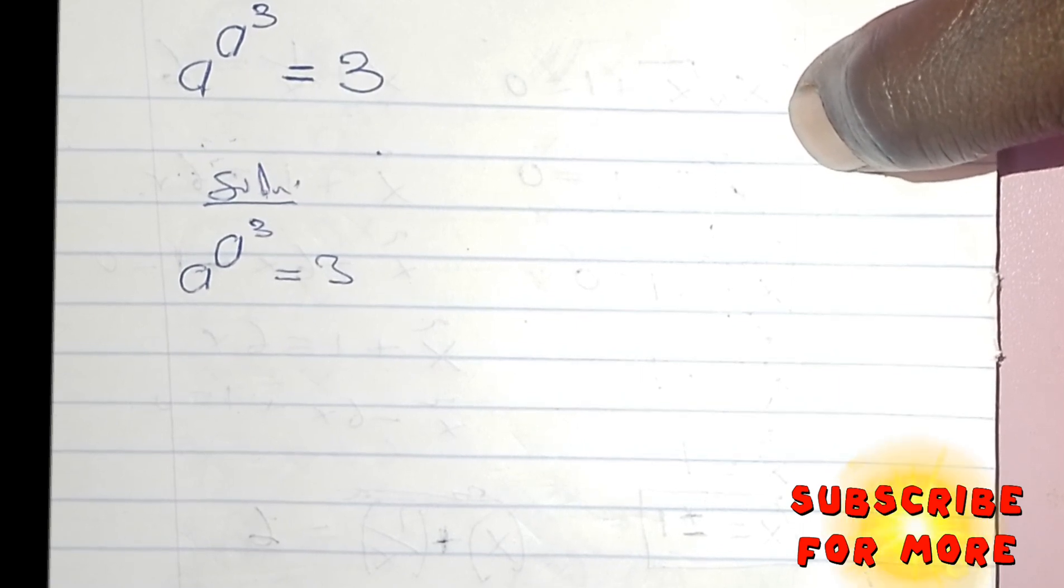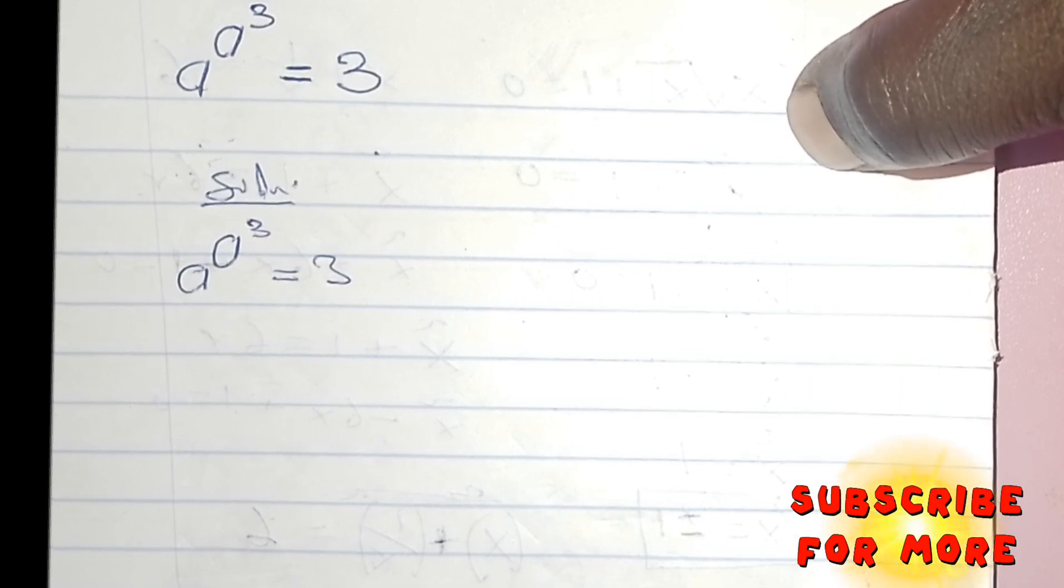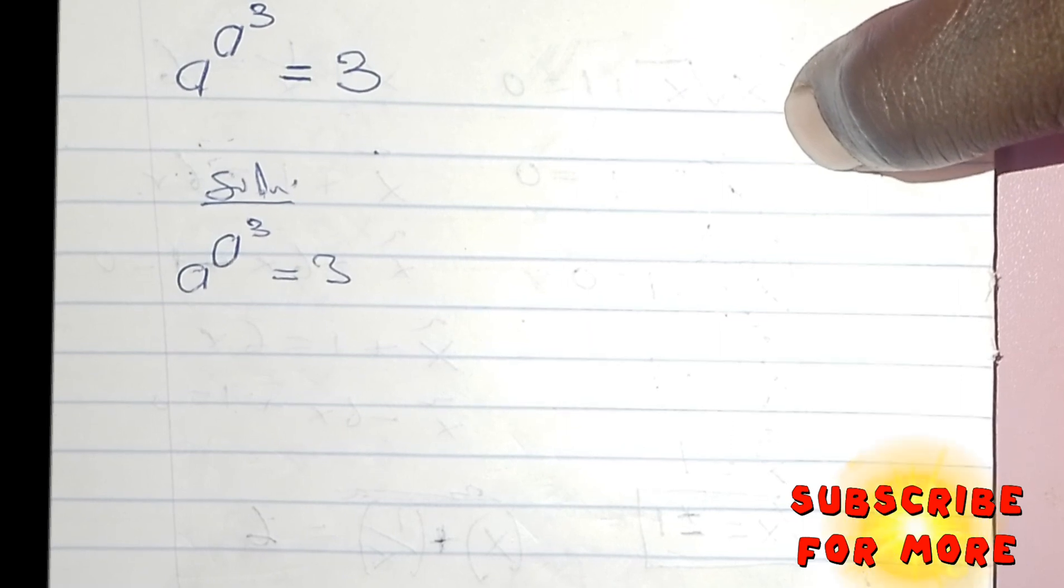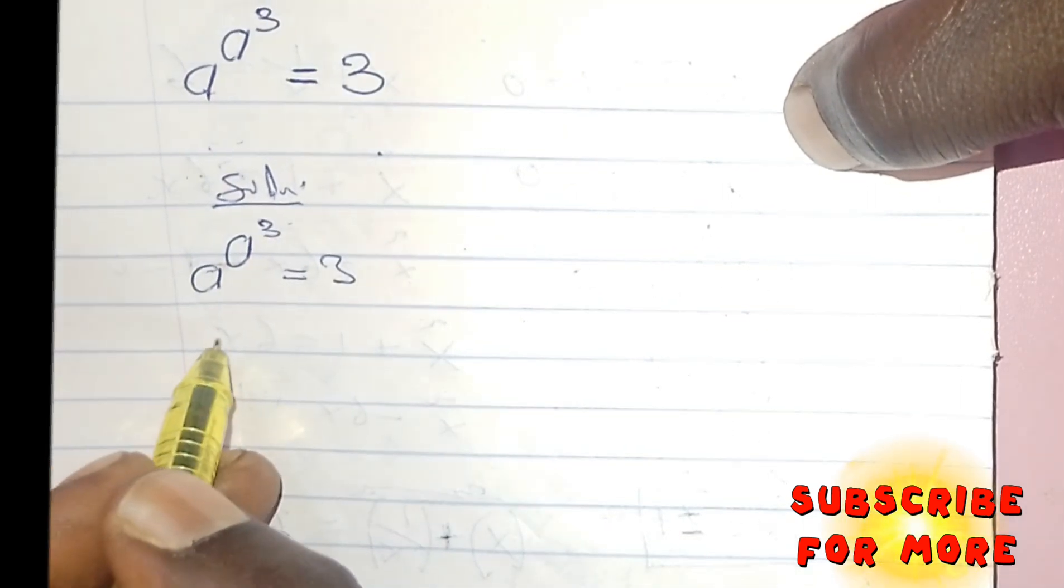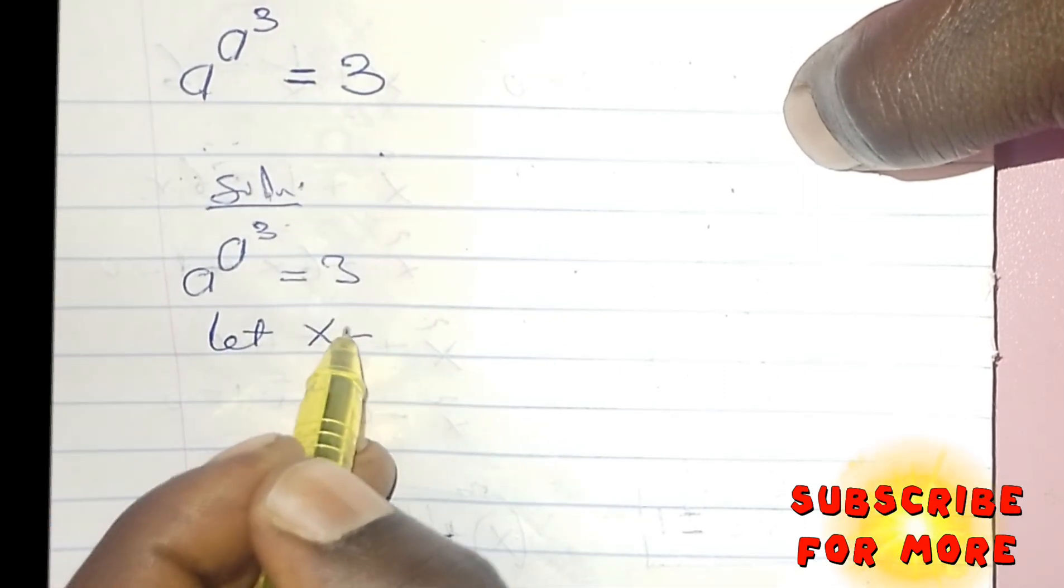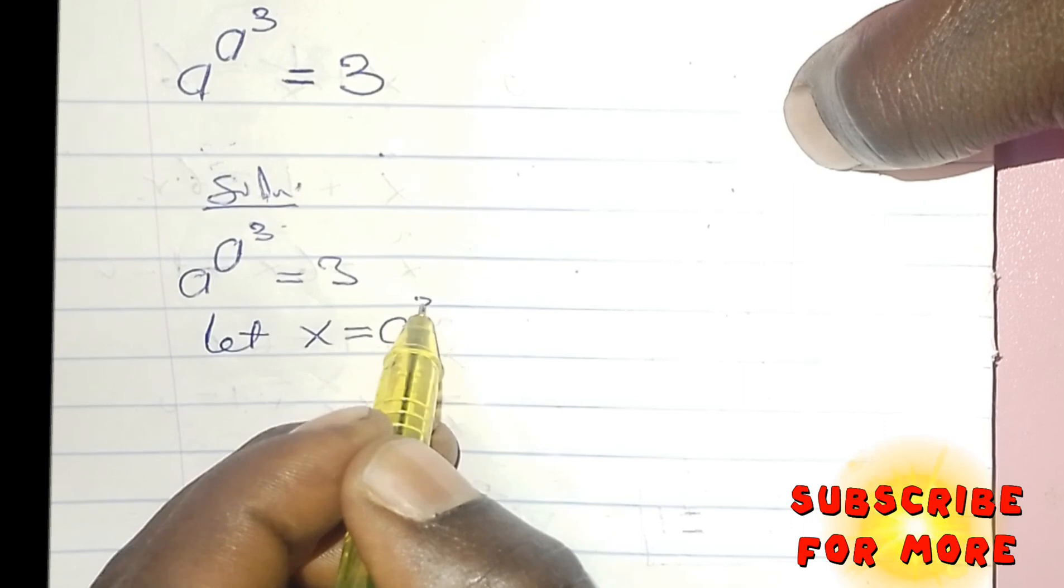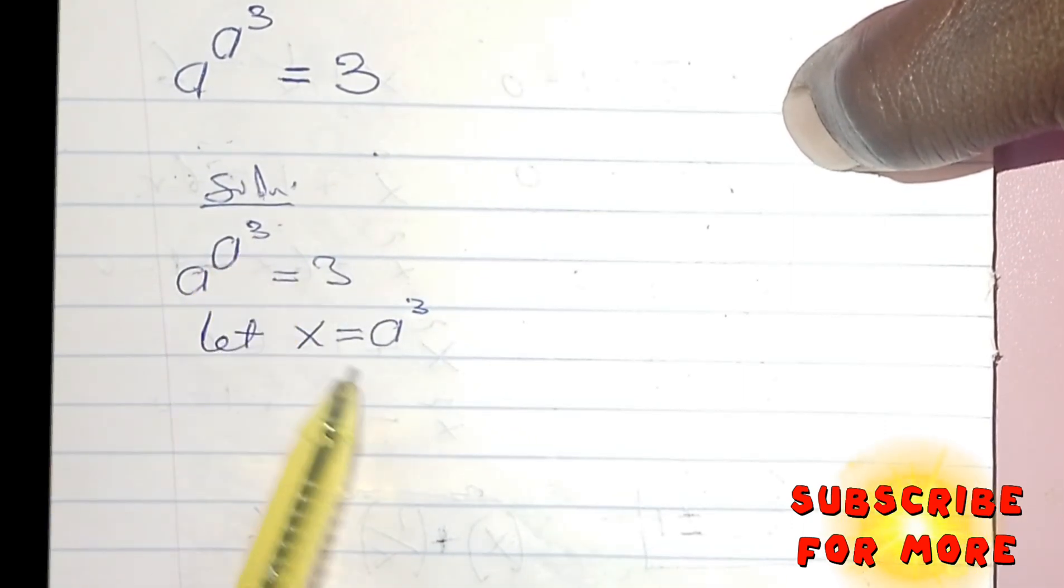What I want to do is that I want to let a particular variable or unknown to be equals A raised to the power of 3. So let's let X equals A to the power of 3.